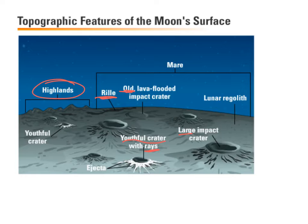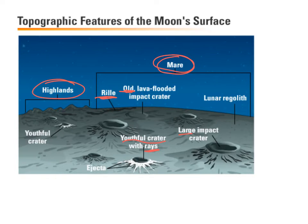The rills were once thought to be canals. That's why they thought there might be people on the Moon or aliens on the Moon, because we had these canals, and that would be a way that they could travel. We also talked briefly about these maria, and the maria are going to be like your seas — a flat region, kind of like a plain, a big broad flat area.